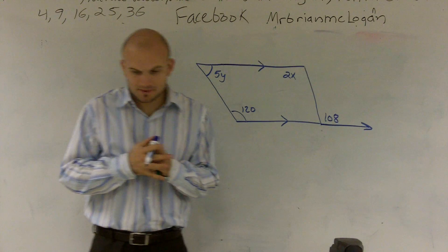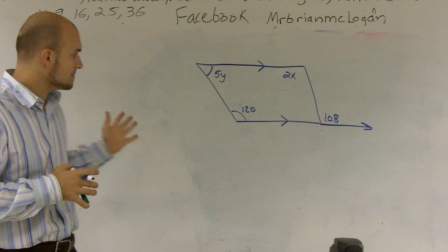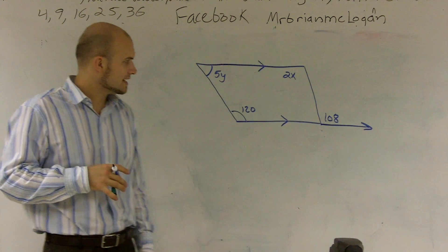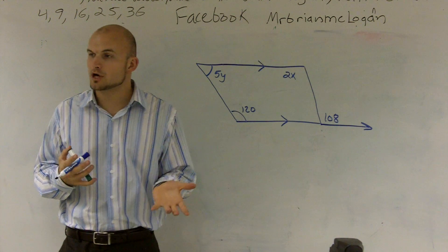All right, so what we have right now is a problem. We have a trapezoid. We have two sets of parallel lines, and with those parallel lines, we have two variables that we need to solve for.